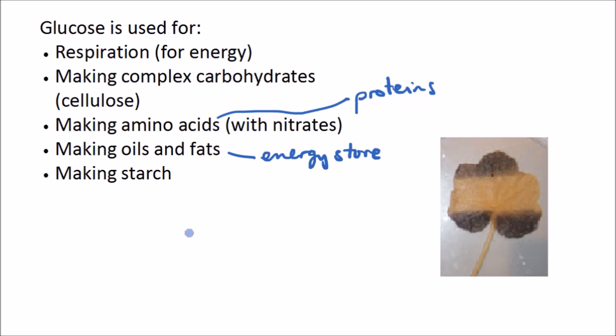Some glucose is converted to starch for storage. Starch provides the plant with energy when it's dark, for example at night, and it can also be used as a long-term store of energy, for example in potatoes. So starch here is another energy store. It uses the starch for energy when it's dark outside, when there's no light and it's not able to do photosynthesis.